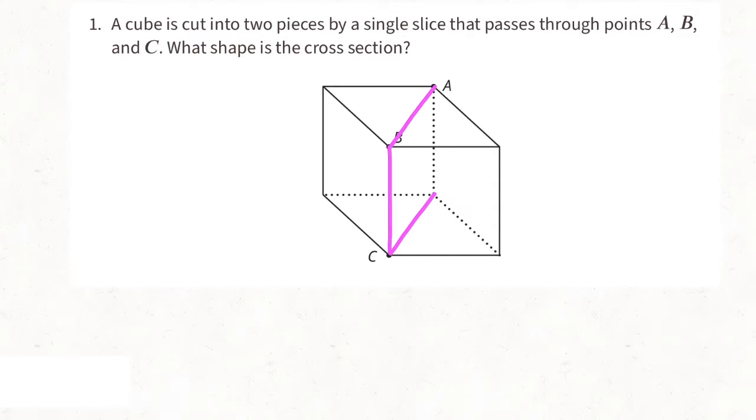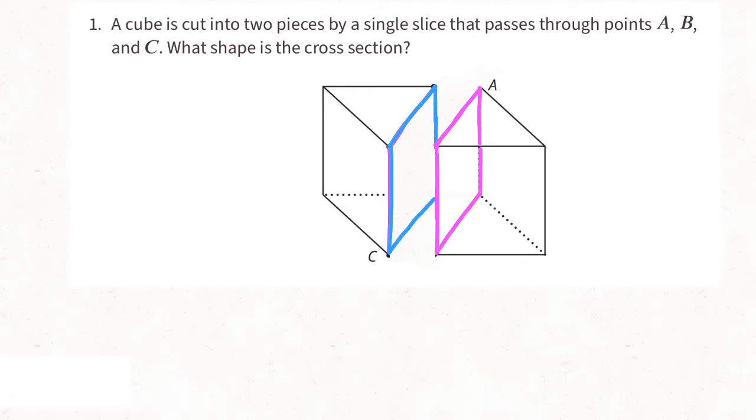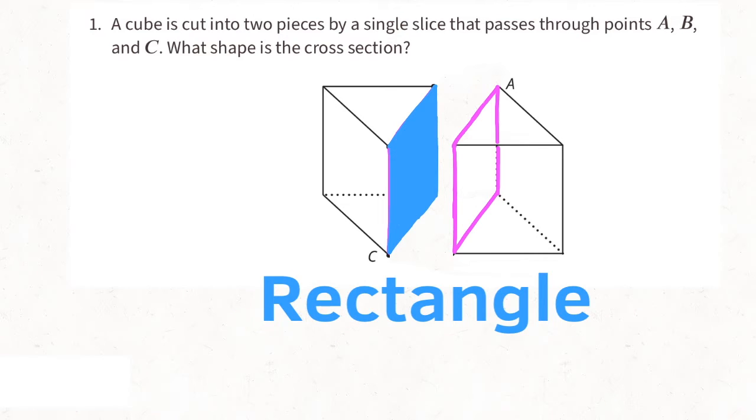Here's the slice through points A, B, and C, and you can see that the cross section is in the shape of a rectangle, just like this green face is a rectangle.